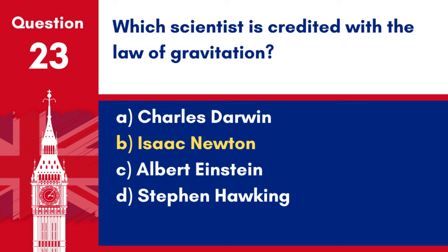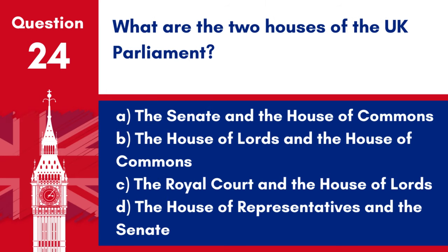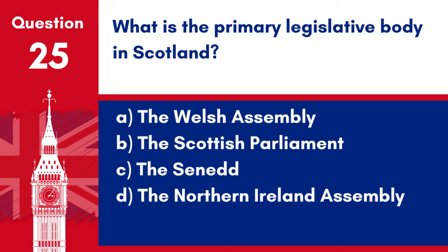Question 24. What are the two houses of the UK Parliament? a. The Senate and the House of Commons. b. The House of Lords and the House of Commons. c. The Royal Court and the House of Lords. d. The House of Representatives and the Senate. Answer: b. The UK Parliament is bicameral, consisting of the House of Lords and the House of Commons.